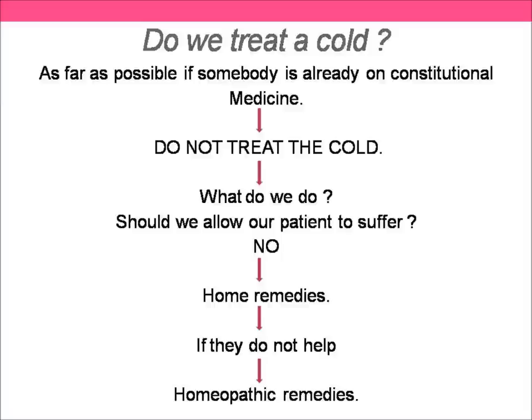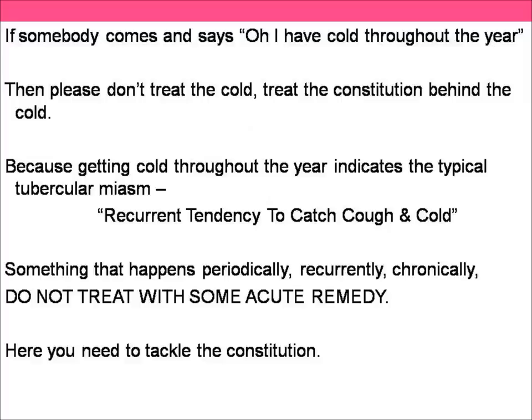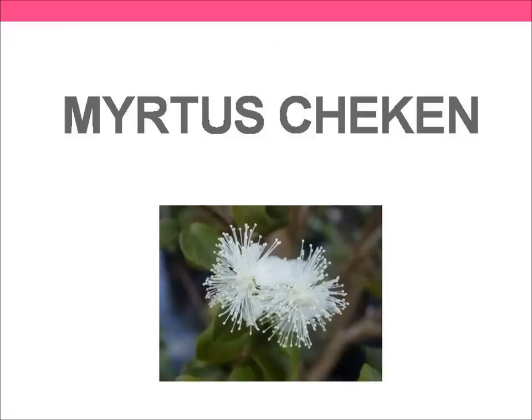When to give and when not to give — that's very important. If somebody says 'I get cold throughout the year,' please don't treat the cold; treat the constitution behind the cold. Getting cold throughout the year indicates a typical tubercular miasm, a recurrent tendency to catch cough and cold. Something which happens very periodically, recurrently, chronically — do not treat with an acute remedy. But for somebody who is very healthy, who only occasionally during an epidemic or season change gets cough and cold — that's the time when you think of the remedies I'll be discussing today.